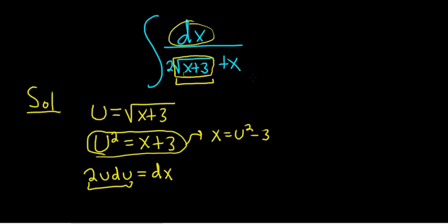All right. Let's go ahead and rewrite what we have. So this is equal to, let's see. So dx, that's going to be 2u du. So that's up top. So 2u du. All right. So far so good. And then on the bottom we have 2, and then we have that square root piece. So that's just 2u. And then we said x was u squared minus 3. So plus u squared minus 3.